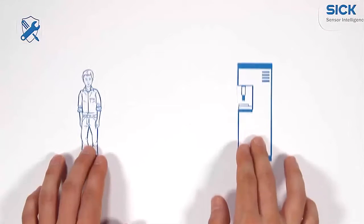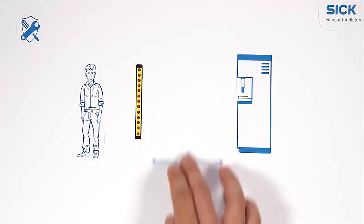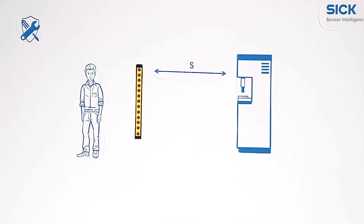For a correct installation, the minimum distance between the machine and the active optoelectronic protective devices is crucial. It can be determined with this formula.